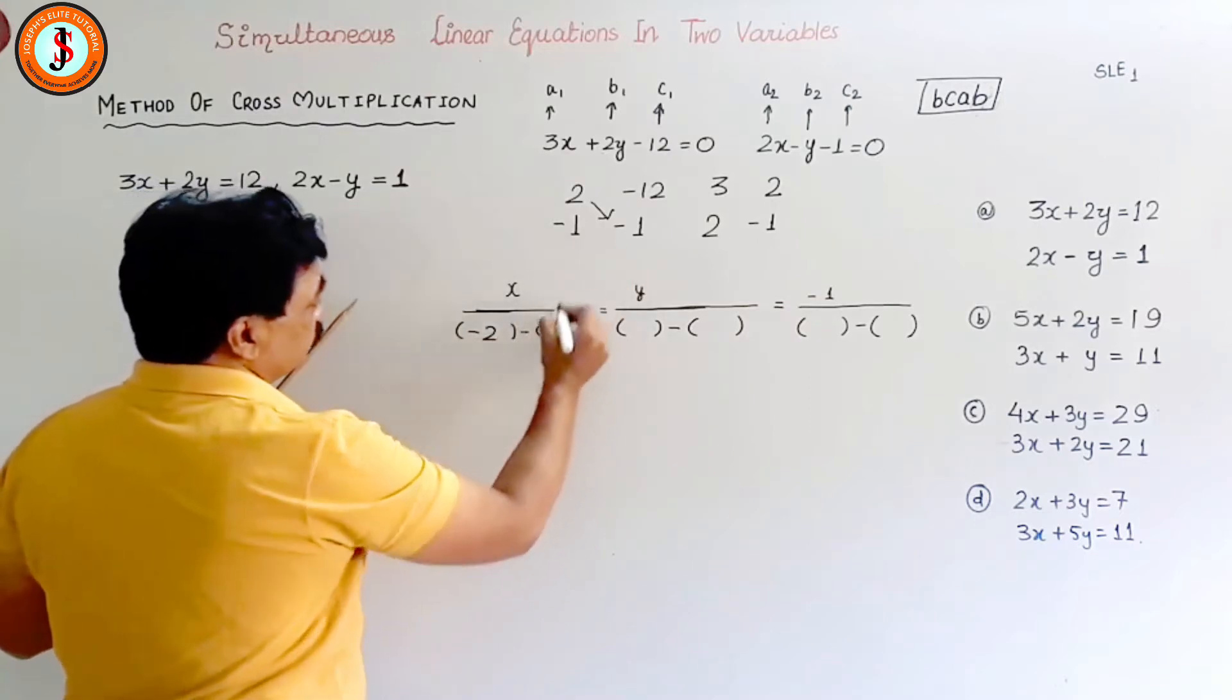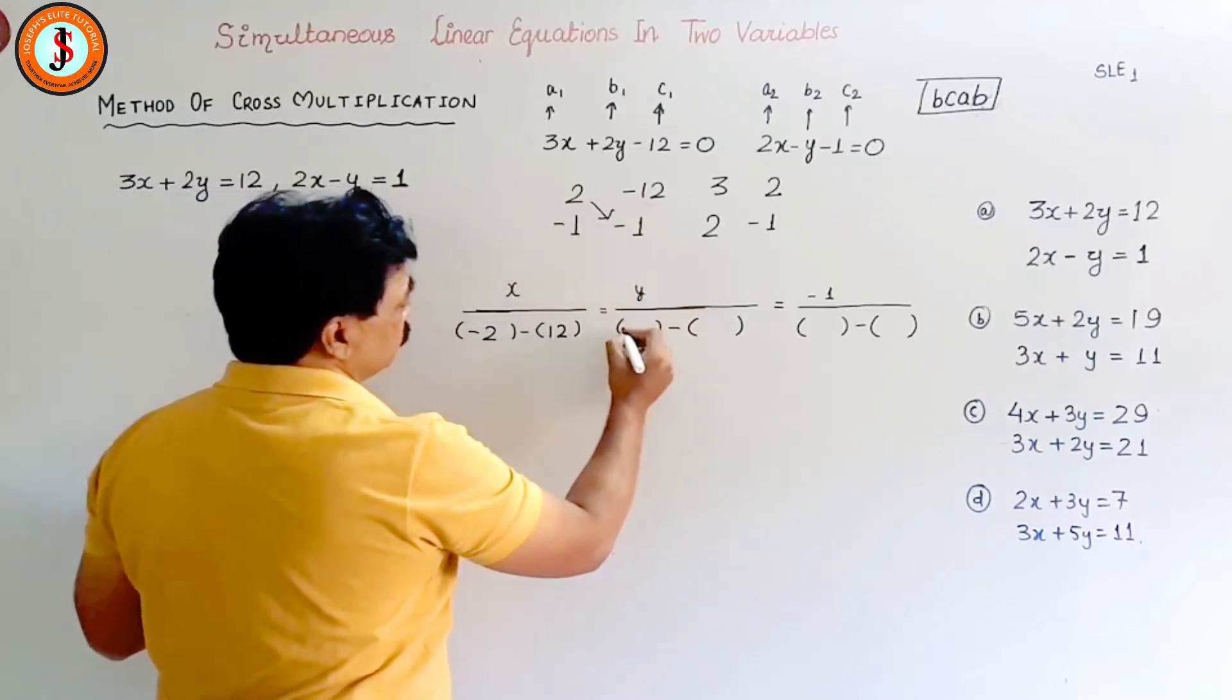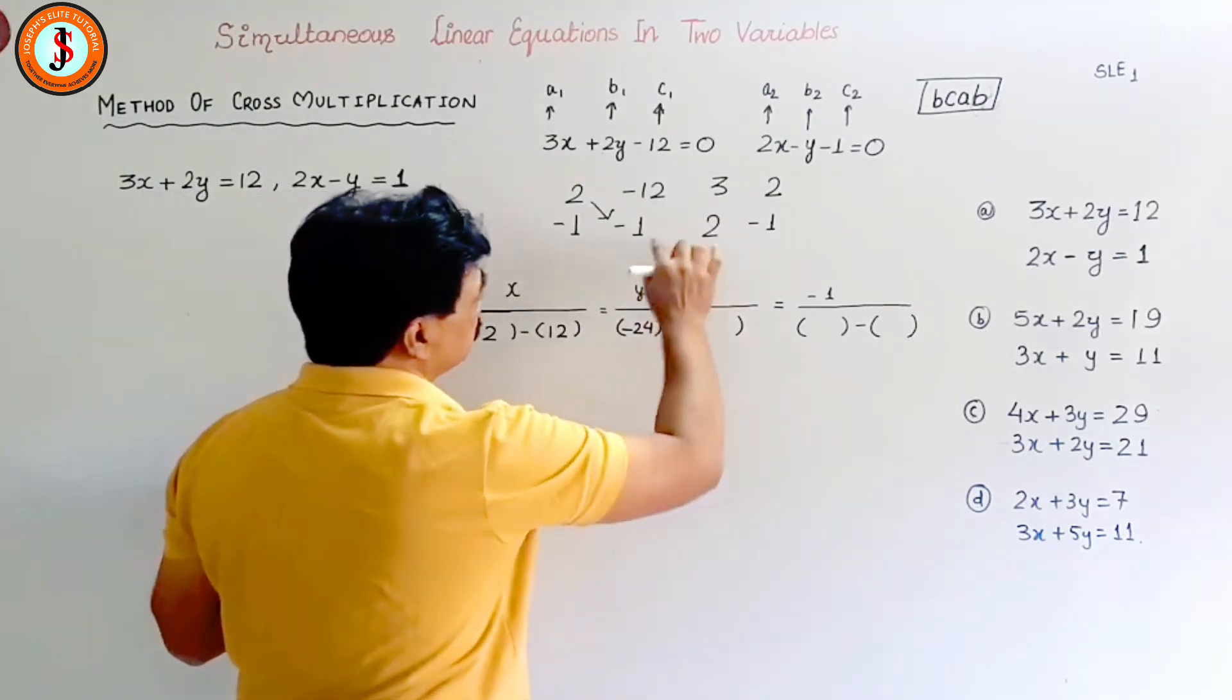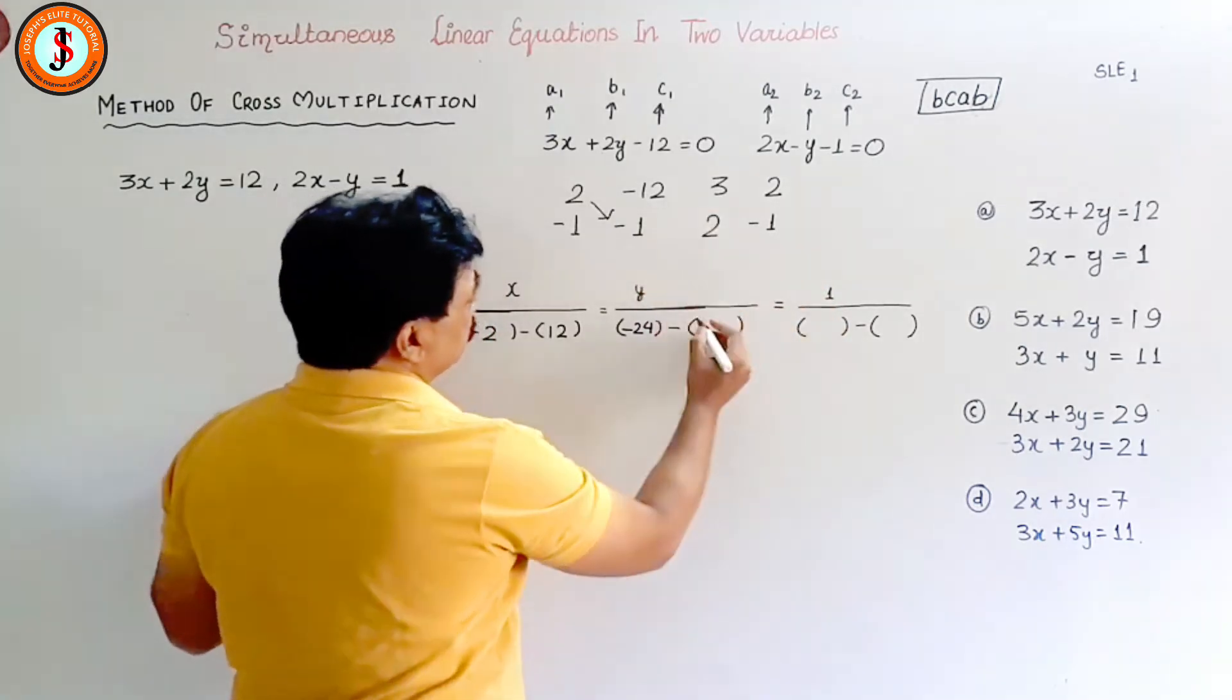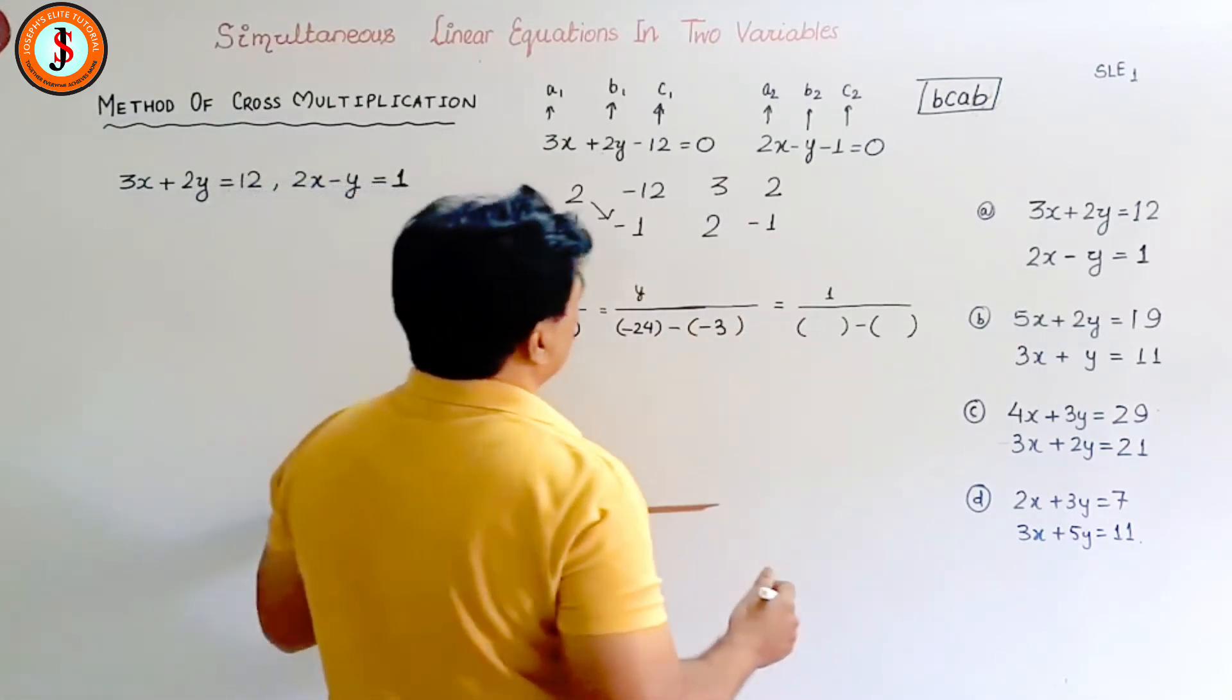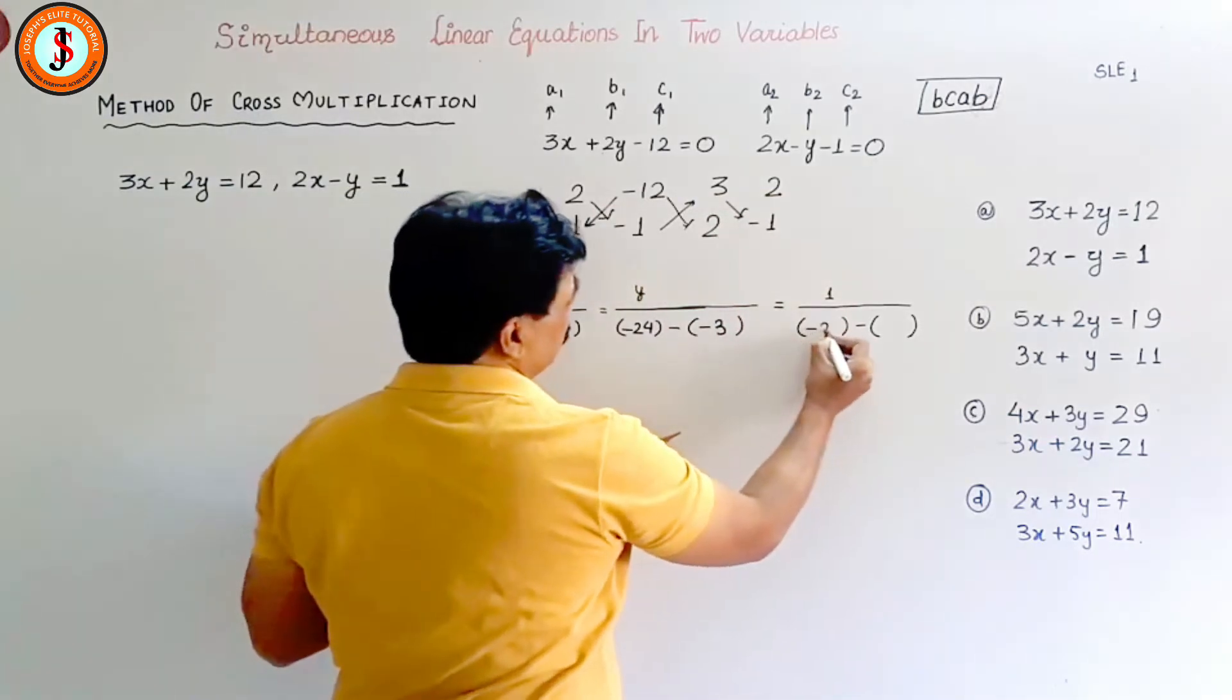12 ones are 12. Both signs negative, so it will be plus. Minus 12 into 2 is minus 24. Now this will be how much is this? Let us see. Minus 1 from here, then it will be minus 3. Now we multiplied this way, this way, this way. Now we are going this way. 3 times 1, so minus 3 into 2 to the 4, so we are getting minus 7.